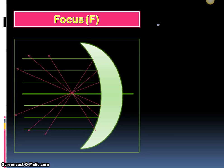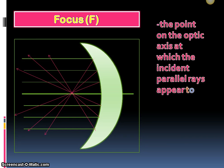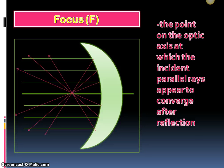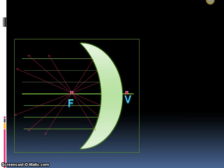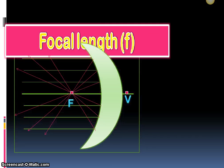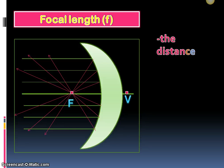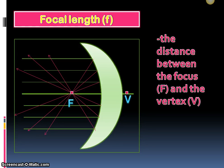it is the point on the optic axis at which the incident parallel rays appear to converge after reflection. Focal length: it is the distance between the focus and the vertex.